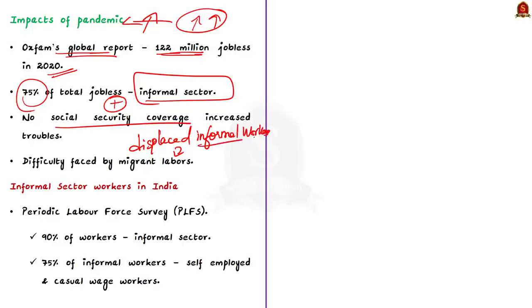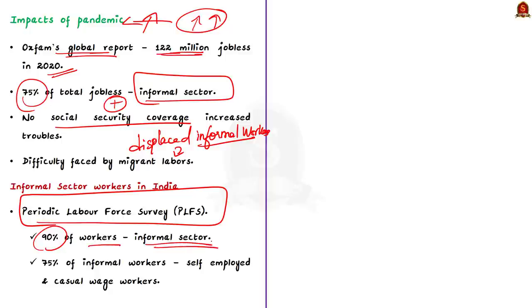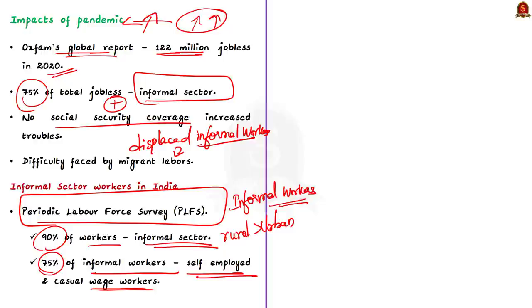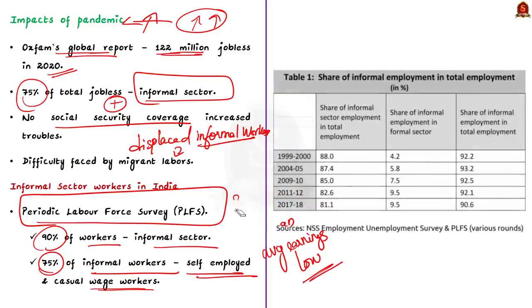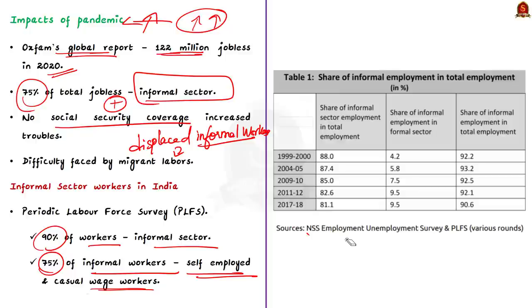To address these issues, the government introduced various programs and measures. Before seeing the steps taken by the government, let us see the status of informal sector workers in India. According to the Periodic Labour Force Survey, that is PLFS, over 90% of workers in India are informal workers. Informal workers in rural areas are far higher than those in urban areas. The PLFS data also shows that 75% of informal workers are self-employed and casual wage workers with average earnings lower than regular salaried workers. The table here shows the change in the share of informal sector employment.